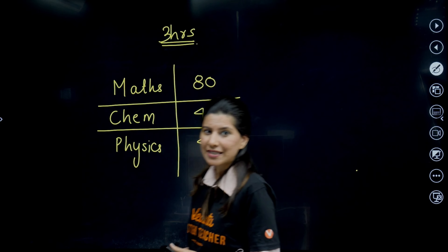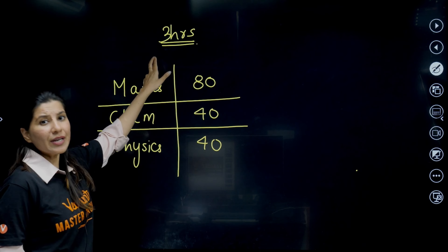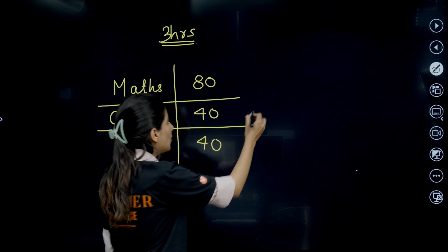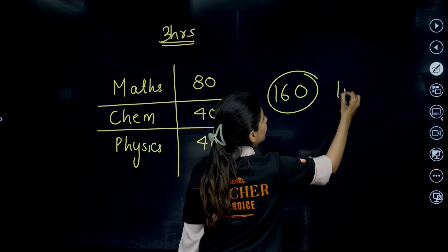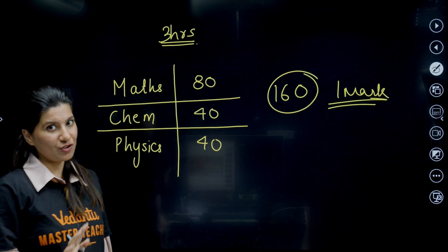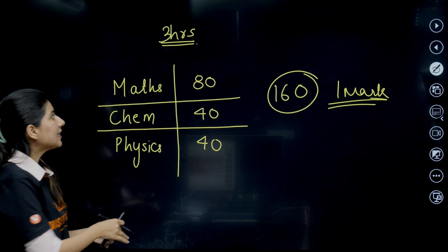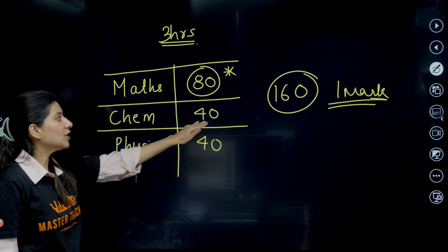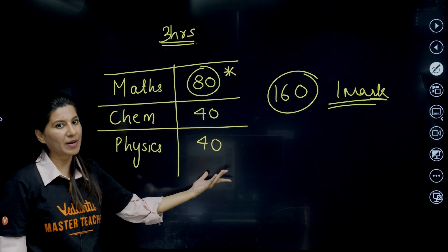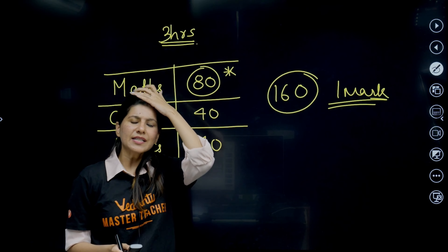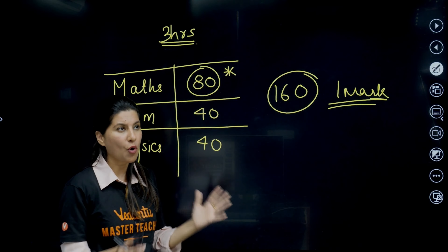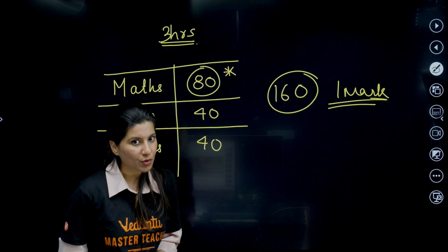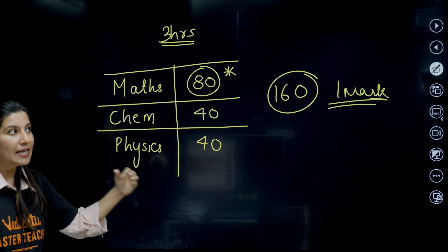First, let me discuss the basic pattern of the examination. You are going to get three hours to complete this examination, wherein you will be asked 160 questions — one mark each. The good news is there is no negative marking, unlike JEE Main. The highest weightage is from the mathematics section: 80 questions, 80 marks. Chemistry has 40 questions, 40 marks, and physics has 40 questions, 40 marks. The syllabus is almost similar to your JEE Main examination; you just need to focus on accuracy, speed, and the question pattern.